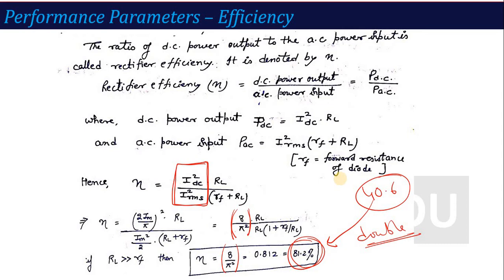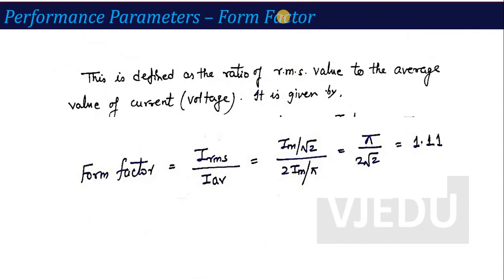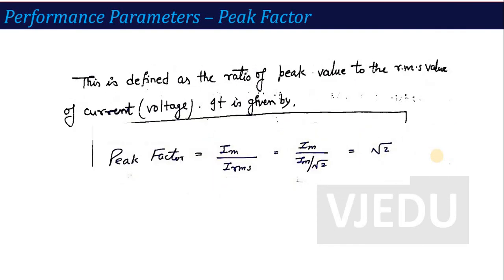The next performance parameter is form factor, defined as the ratio of RMS value divided by average value. The RMS value is Im/√2 and the average value is 2Im/π. Putting in these values, the form factor for a full wave rectifier is 1.11. Next is peak factor, defined as the ratio of maximum value divided by RMS value. The RMS value is Im/√2, so the peak factor is √2.